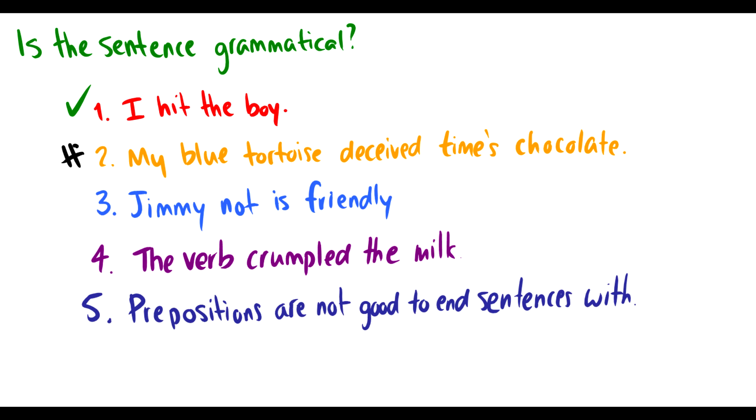Ask yourself this: Does it make sense? The answer is no, this sentence does not make any sense. It is semantically unsound, so we put a little hashtag there to mean that it doesn't quite make sense. But when you said it, the structure seemed okay. My blue tortoise deceived times chocolate. Yes, my object verbed some other object. It's fine, it's grammatically fine, it just doesn't make sense. So this is one of those examples that is syntactically okay, but maybe semantically wrong.